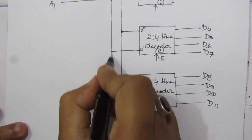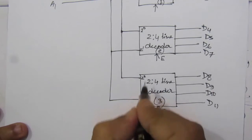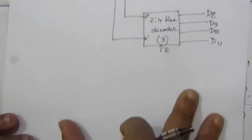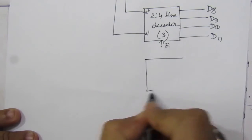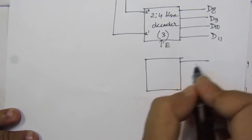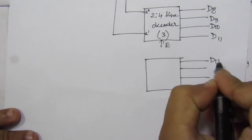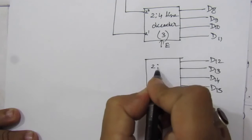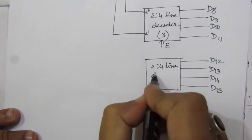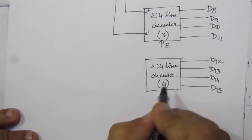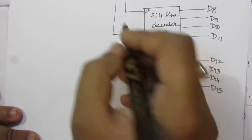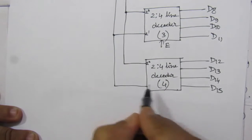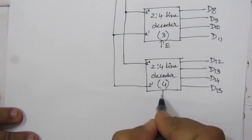Here also we will have to give these inputs: 2 to the power 0 and 2 to the power 1. Then we have a fourth decoder with 2 inputs and 4 outputs: D12, D13, D14, D15. This is a 2-to-4 line decoder — number 4. Here also we will have these input lines, 2 to the power 0 and 2 to the power 1, and an enable input line.